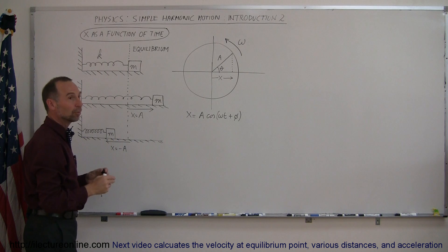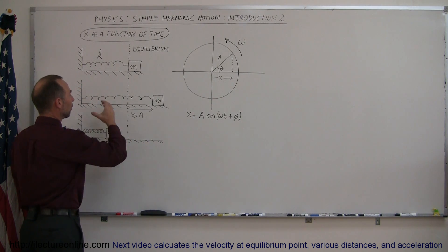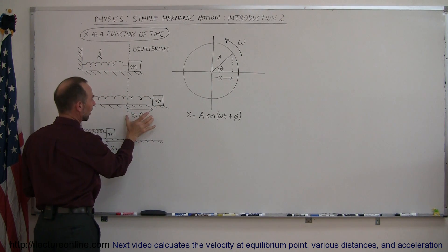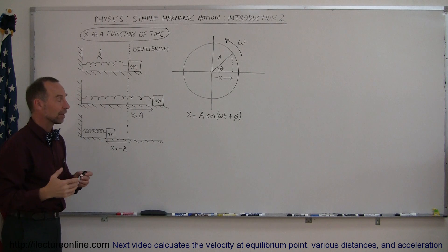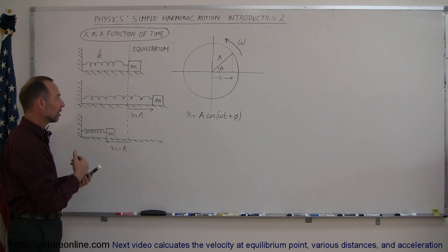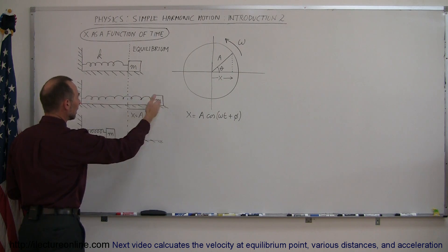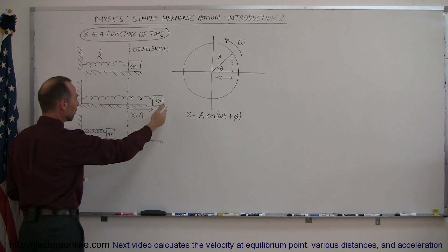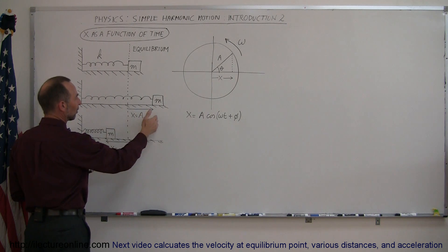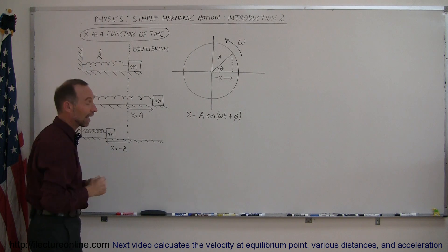At this point the system is in equilibrium, so the spring is neither elongated nor compressed. If we now pull on the spring and push the mass out at distance a, that becomes the maximum displacement — the amplitude of the oscillatory motion. If we let go, the mass will start oscillating back and forth, going from x equals a to x equals minus a.